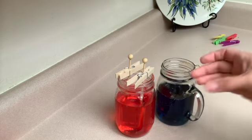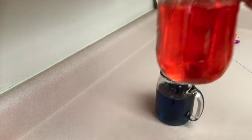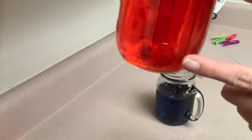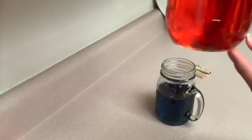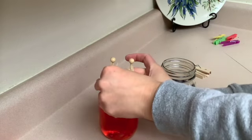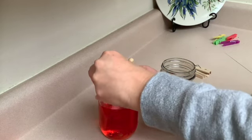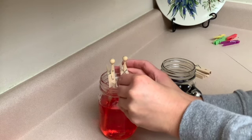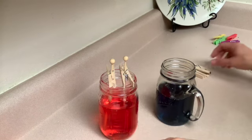You can do one per jar or you can do two per jar. Just make sure you have enough space around both skewers on all sides and on the bottom so that your rock candy can grow. Repeat this process with any other jars you have.